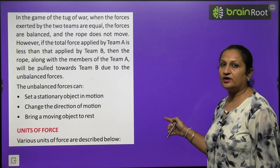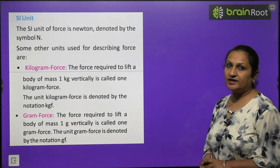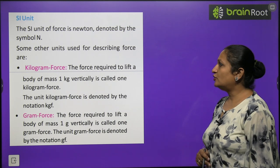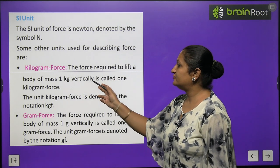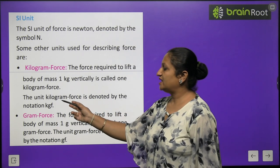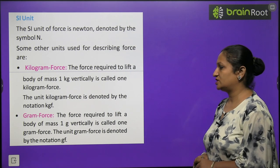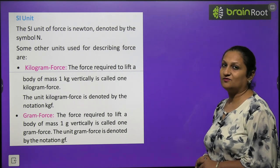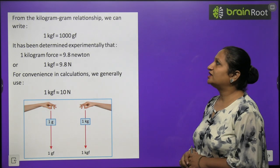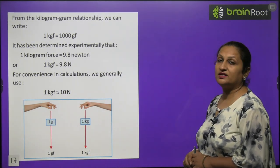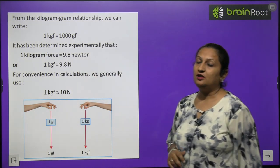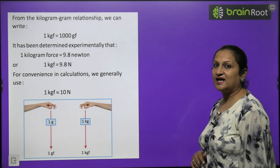Units of force: the SI unit of force is Newton, denoted by capital N. Other units include kilogram force (kgf) — the force required to lift a body of mass 1 kg vertically. A smaller unit is gram force (gf) — the force required to lift a body of mass 1 gram vertically. 1 kilogram force equals 1000 gram force. Experimentally, 1 kgf equals 9.8 Newton; for convenience in calculation, we take 1 kgf as 10 Newton.